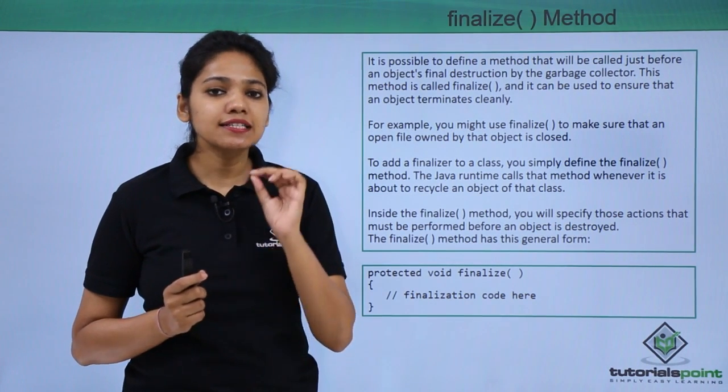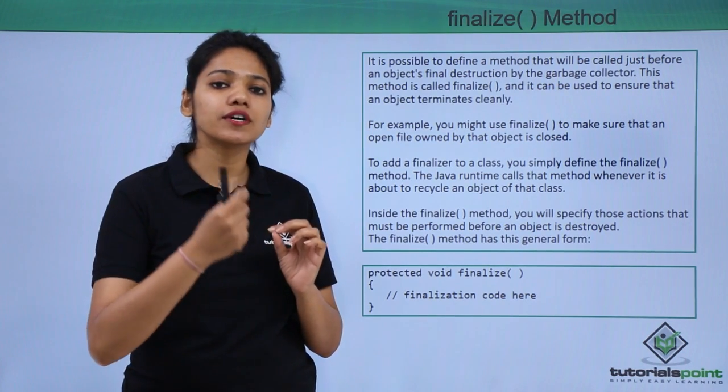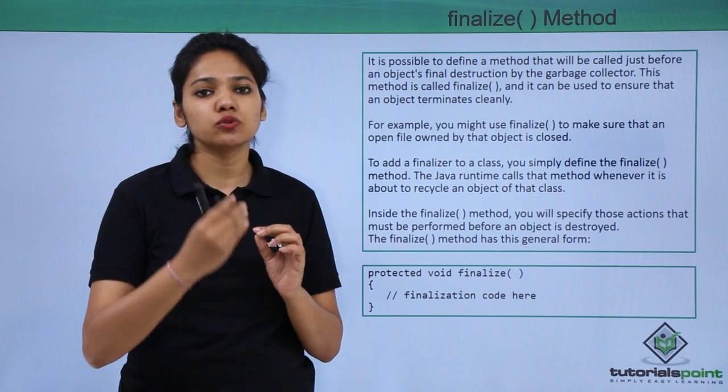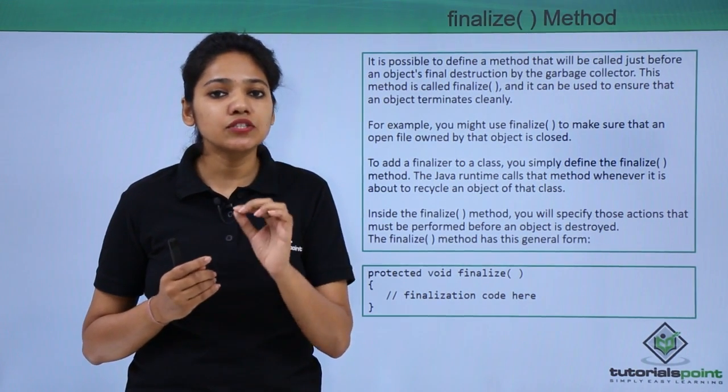What the thread scheduler does is that it will schedule the task to be performed first, second, and third. It schedules the threads which need to run over the other. The last thread is garbage collector.